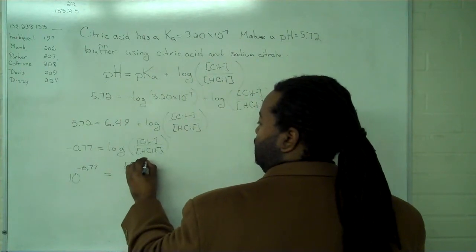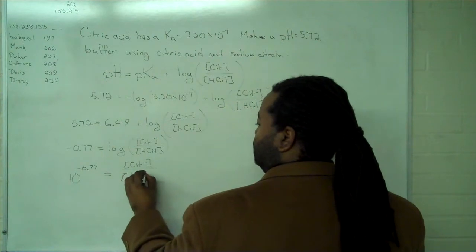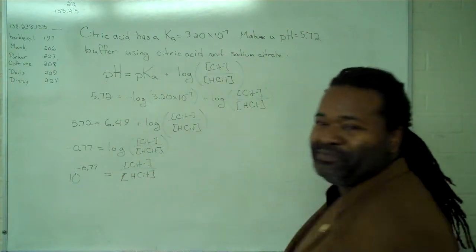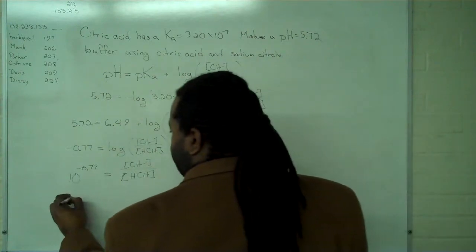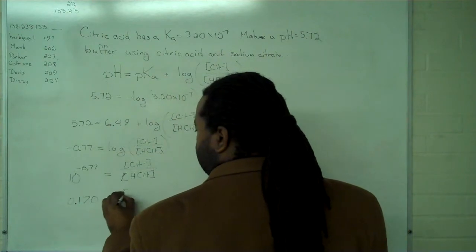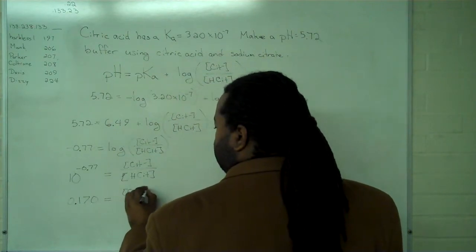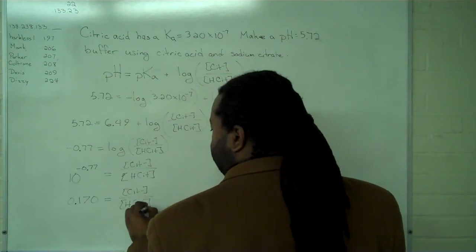And so now we can see that we have the ratio of citrate ion to citric acid. We simplify this value and find that we have 0.170.